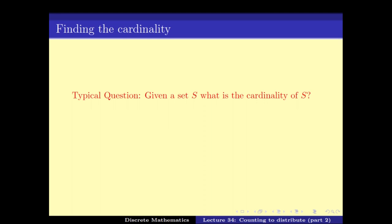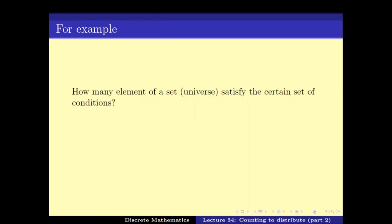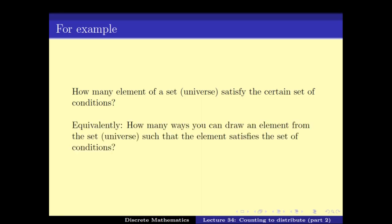The question to be asked is: how is the set given? Most of the time when we talk about this kind of problem, we say that the set is given implicitly — it is not given explicitly, it has been described. For example, it can be something like: how many elements of a particular universe set satisfy certain conditions? Or equivalently, how many ways can you draw an element from the set such that the element satisfies a set of conditions?